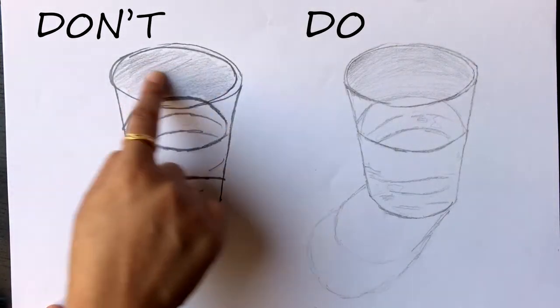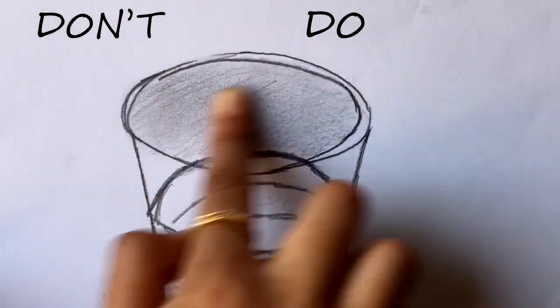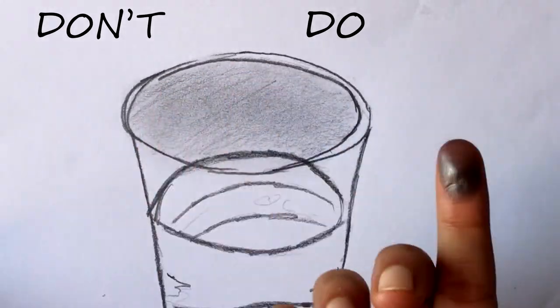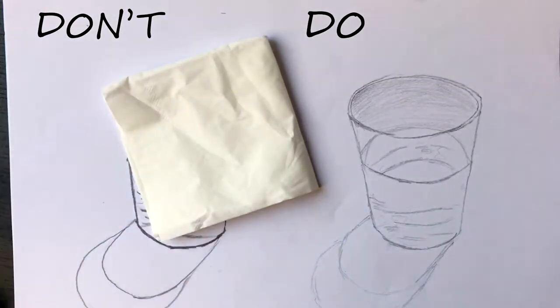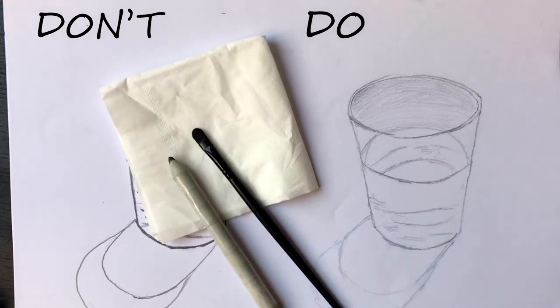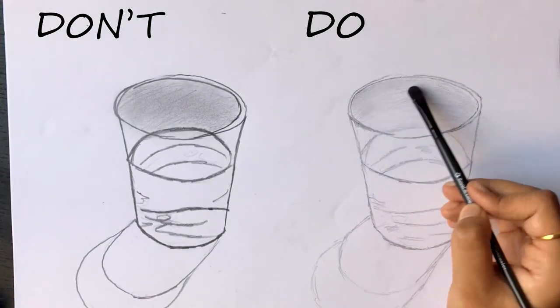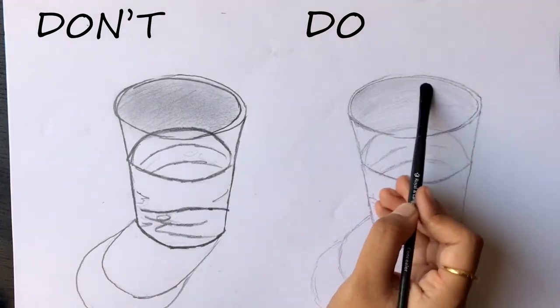When blending, do not blend with your fingers. This will not give an even blend and you will have less control. Instead, use a tissue, a brush, or a blender, also called a paper stump. Here is an example of using a brush and you can see the difference between the two drawings.